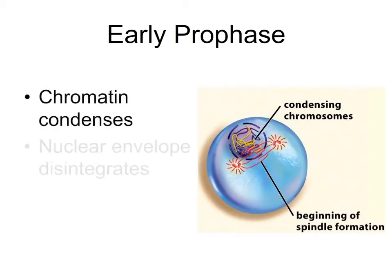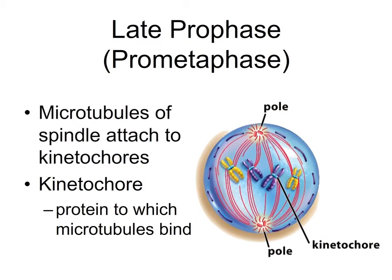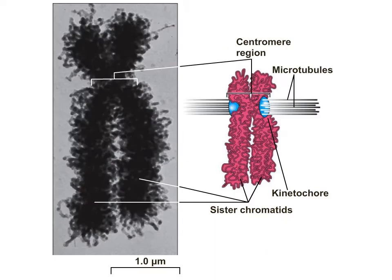In the early part of prophase, the chromatin continues condensing, the nuclear envelope disintegrates, and the spindle apparatus forms. The spindle apparatus grows from the centrioles in the animal cell and is composed of microtubules that will attach to the chromosomes. During the last part of prophase, sometimes referred to as prometaphase, the centrioles migrate to opposite poles of the cell as the microtubules attach to the chromatids at a specific protein complex called the kinetochore.